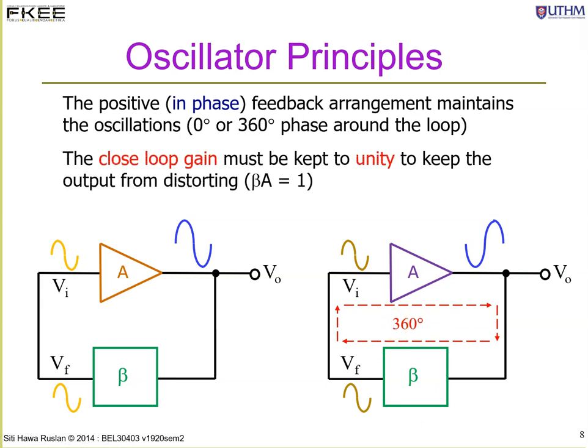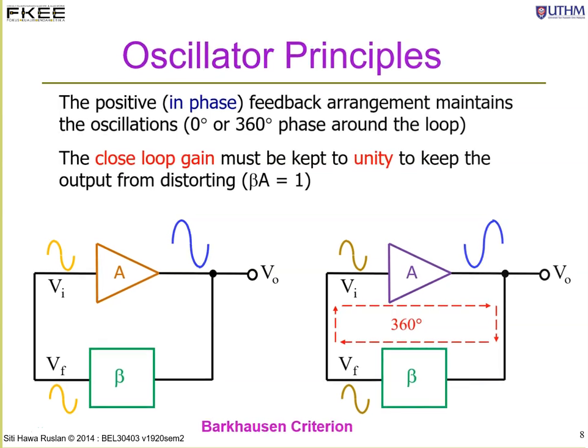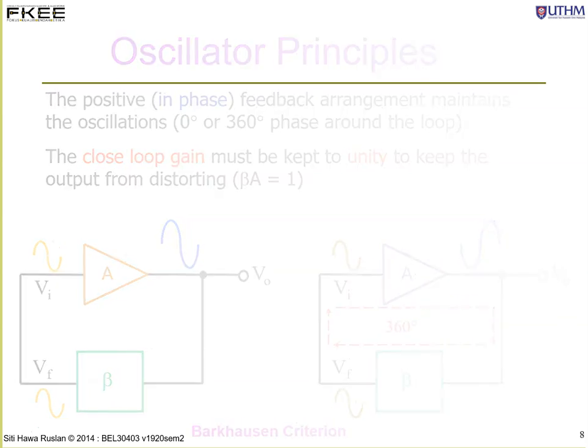Another important condition is that the closed-loop gain beta multiplied by A must equal 1. This is the Barkhausen criteria that must be fulfilled in order for the circuit to operate as an oscillator.